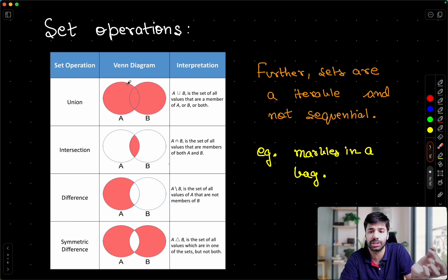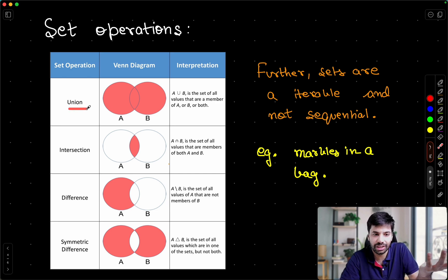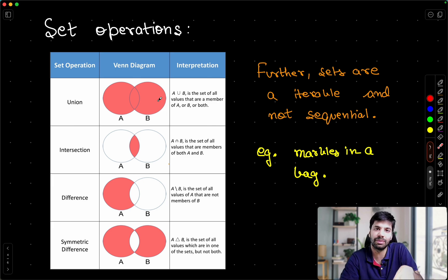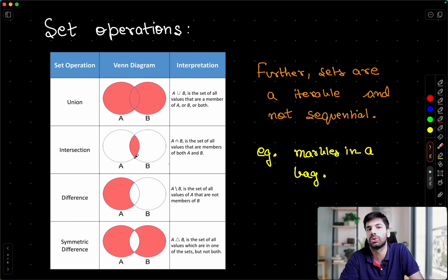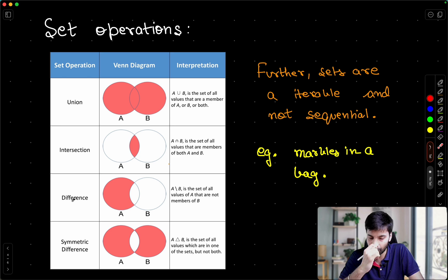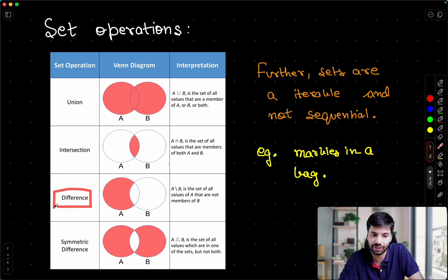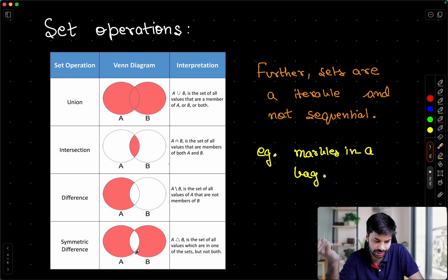Now let us look at set operations — you will remember these from school. Union combines all elements from both sets. Intersection gives only the common elements — for example, the intersection of prime numbers and even numbers is just {2}, since two is the only even prime. Difference removes elements of the second set from the first. Symmetric difference removes whatever is common and keeps everything else.